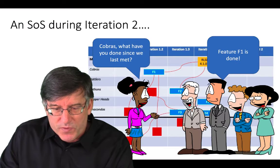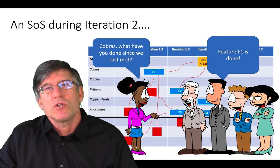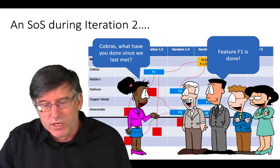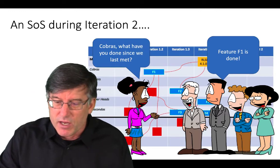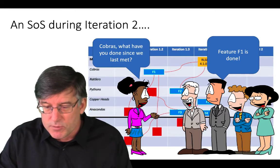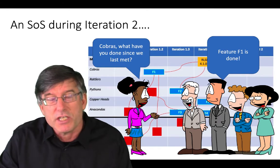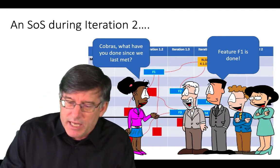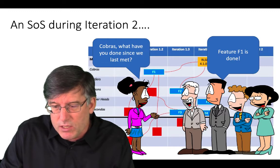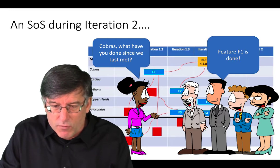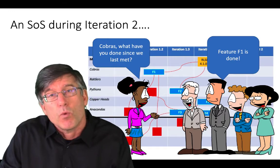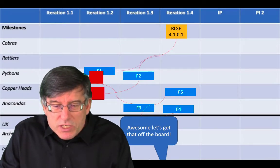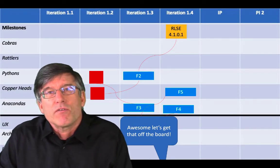Let's follow the time through. We're into iteration two, having another Scrum of Scrums. The RTE is asking what's happened, and someone from the Cobras says, feature F1 is done. So we take feature F1 off of the board. What you're probably noticing is that ideally, as time moves across the board, dependencies and features are coming off the board, giving us a visual indication that things are getting done.